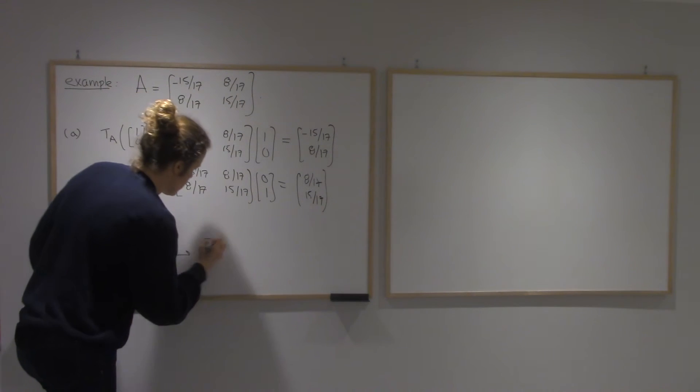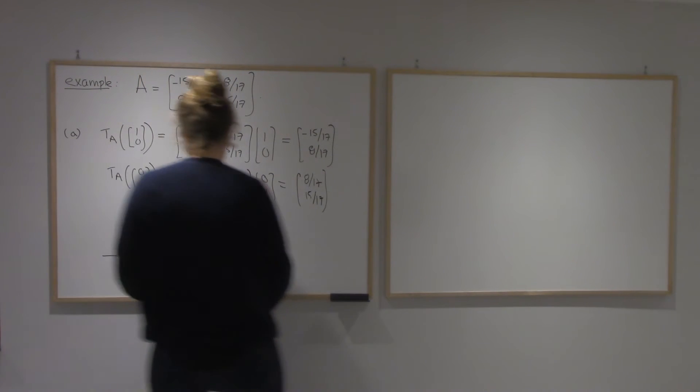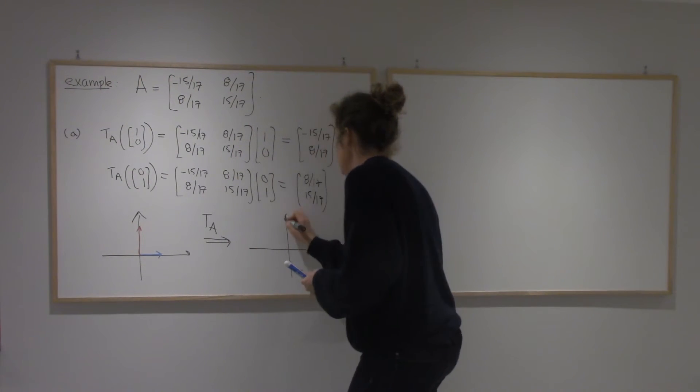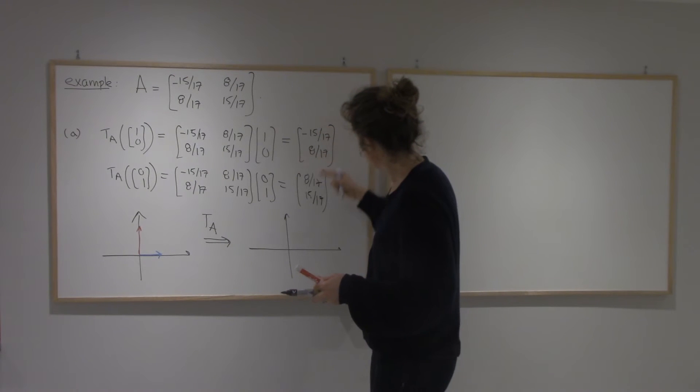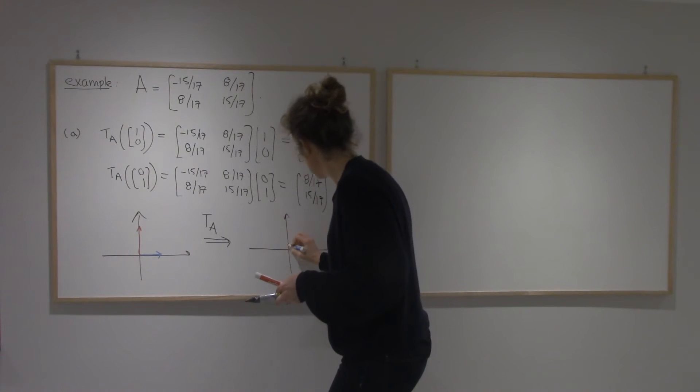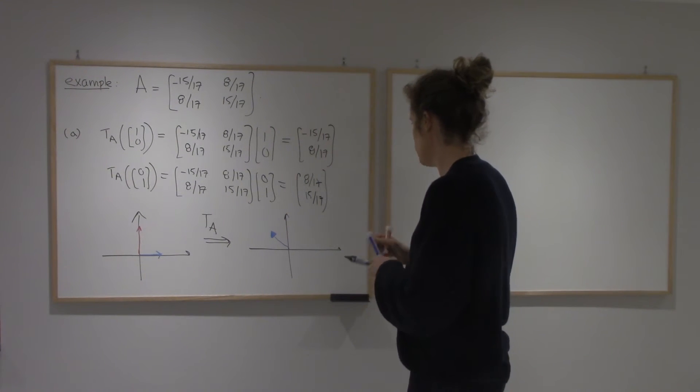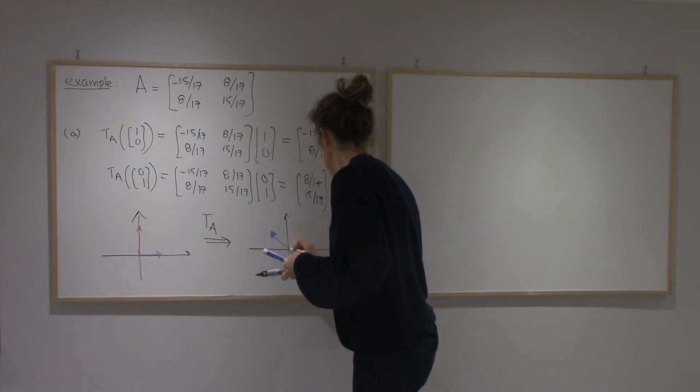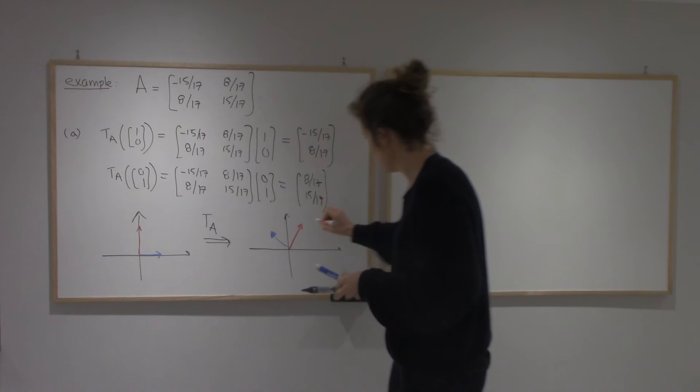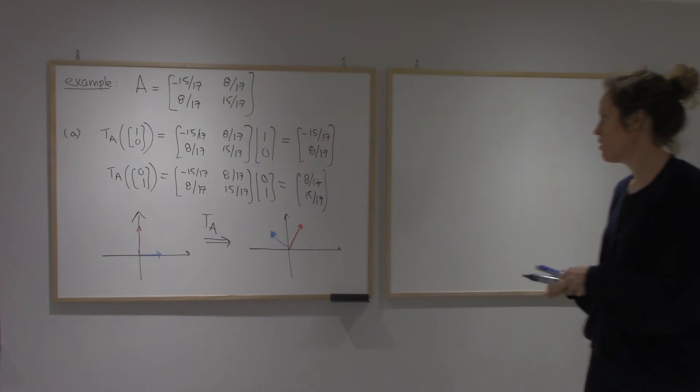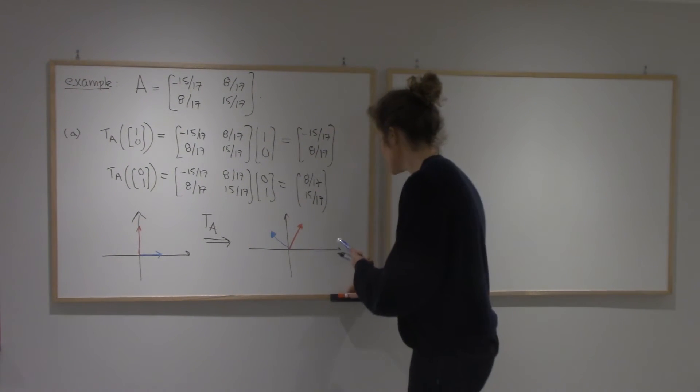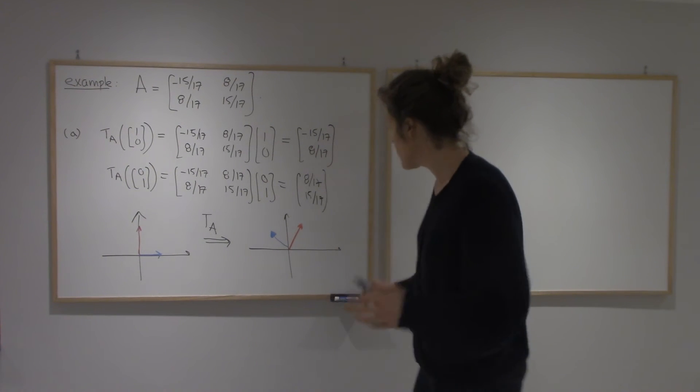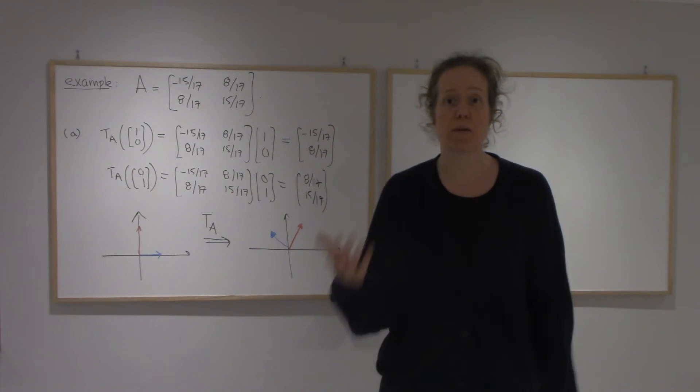If I multiply by A, I'm going to still be in the plane. I'm going to get the blue one. It's this one, so minus 15 over 17, that's around here. 8 over 17 looks something like this. And 8 over 17, 15 over 17 looks something like this. It's hard to see what this is. It looks something like a reflection maybe, because the two are switching, the lengths are not changing, the angle is the same, but it's not clear.